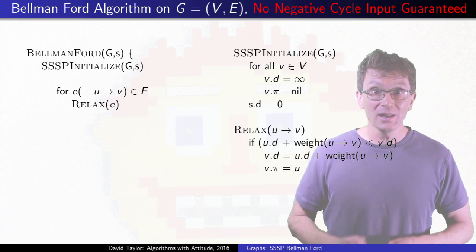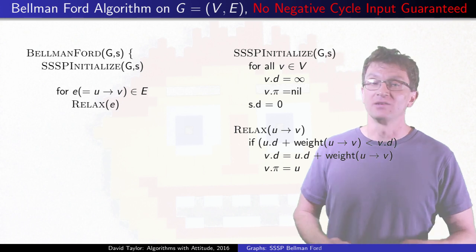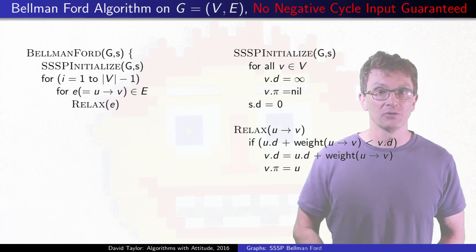This algorithm really relaxes all of the edges in arbitrary order, whatever. But it does that V minus 1 times for V vertices.